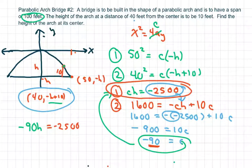You divide both sides. You're going to get H is approximately 27.78 feet.